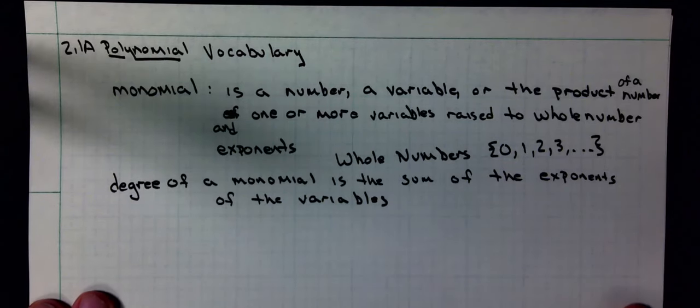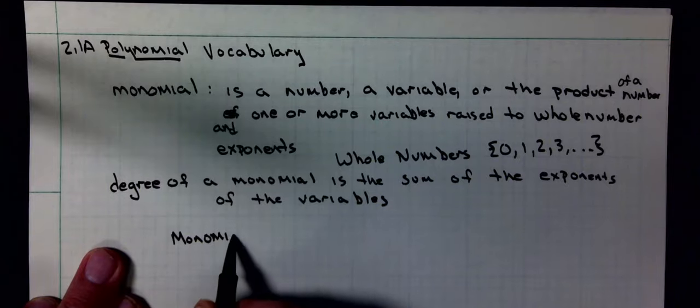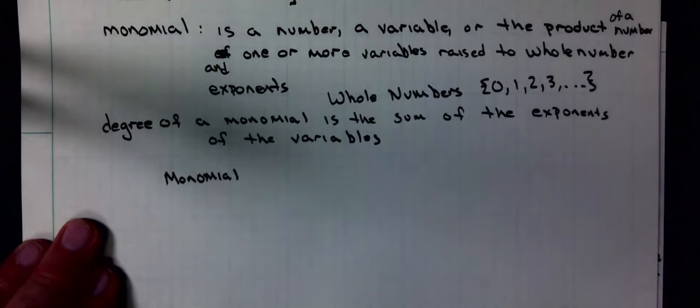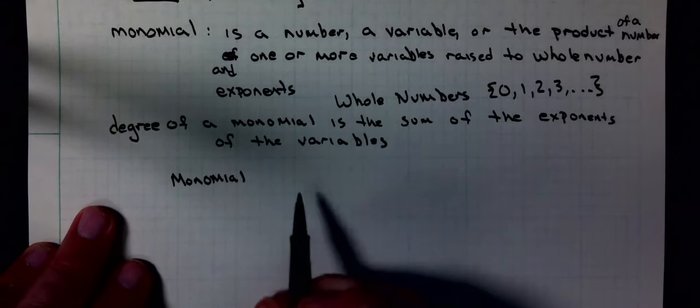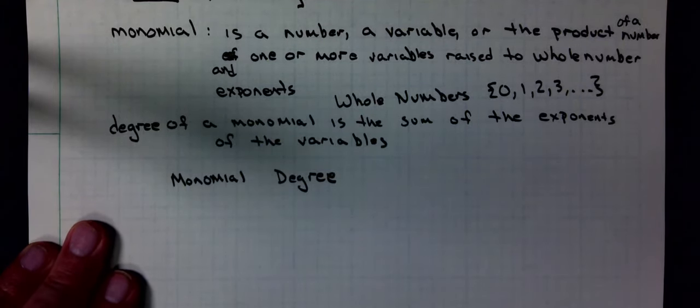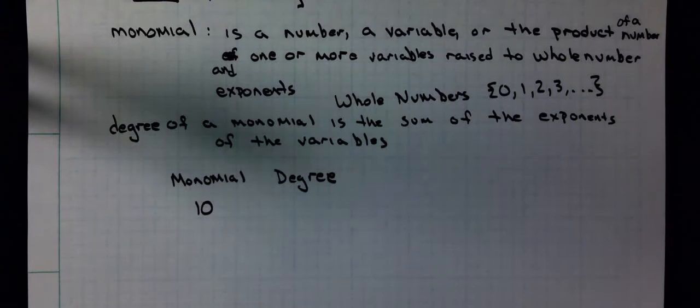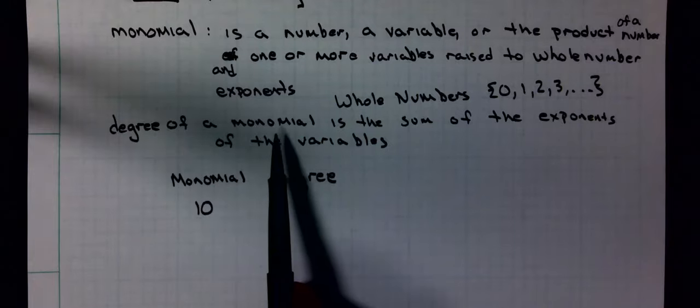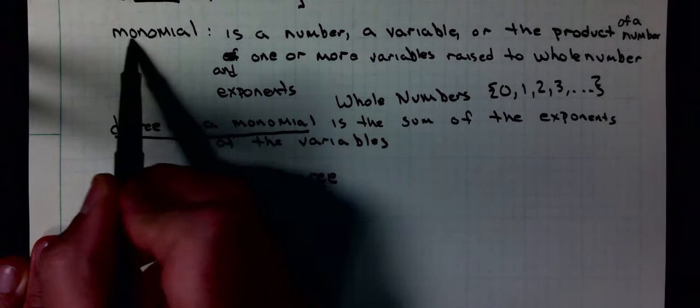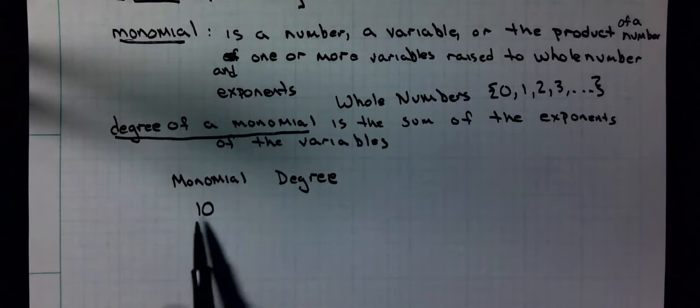So I am going to write some monomials down and figure out what the degree is. First one is 10. That's a monomial because it is a number. And the degree of the monomial is the sum of the exponents of the variables. Well, there is no variable, so the degree is 0.